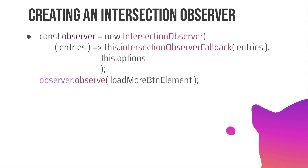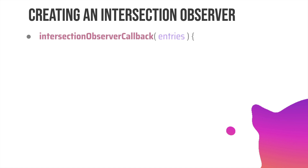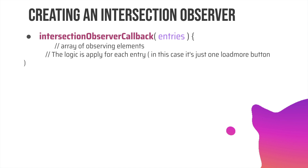Finally we call observer.observe() and pass the element we want to observe — in our case it will be the load more button element. The IntersectionObserver constructor's observe method is what we call to start observing. Inside the custom intersectionObserverCallback function we have access to entries, which is an array of the observed elements. The logic is applied for each entry — in our case we observe just the load more button, so we loop through entries using entries.forEach.